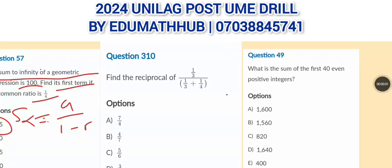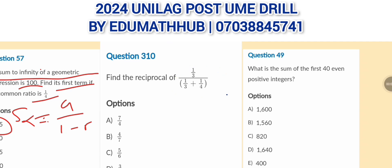For the second question, we need to find the reciprocal of (1/3) divided by (1/3 + 1/4). First, simplify the denominator by adding 1/3 + 1/4. The LCM is 12, so 3 goes into 12 four times and 4 goes into 12 three times, giving 4 plus 3 over 12, which is 7 over 12.